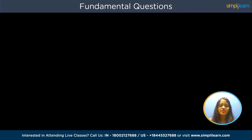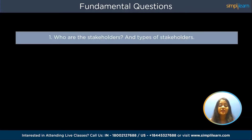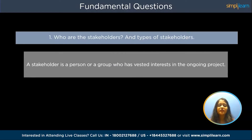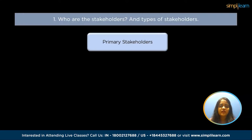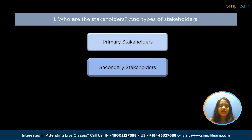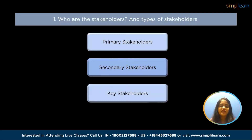Coming to fundamental questions. The first question is: who are the stakeholders and what are the types of stakeholders? A stakeholder is a person or a group who have a vested interest in the ongoing project. He or she will be affected by the pace and result of the project. There are three types of stakeholders: primary stakeholders, secondary stakeholders, and key stakeholders.